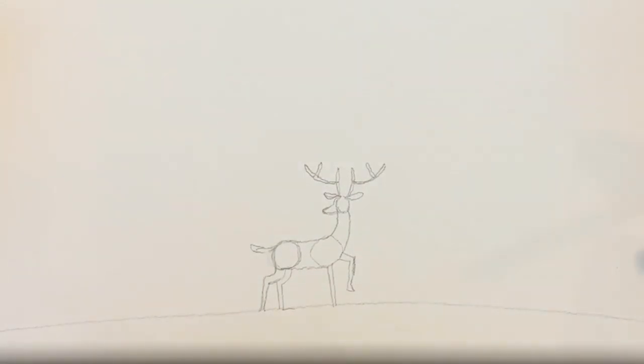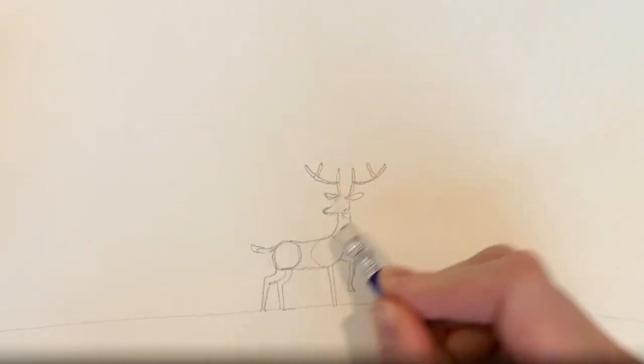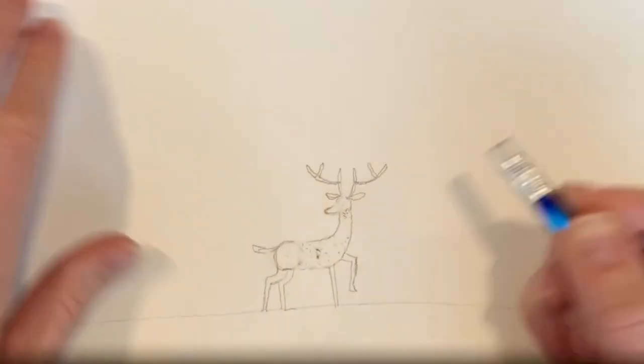That's the silhouette of my deer. I could erase these inside lines, but I don't actually need to because I'm going to be going over the whole thing in Sharpie later.